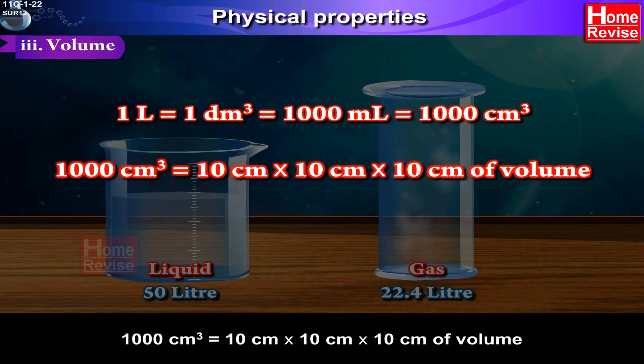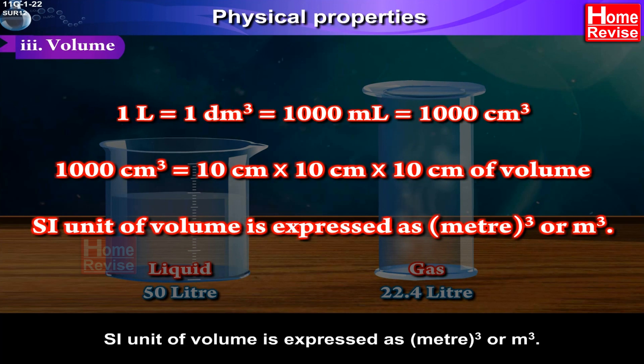1000 centimeter cube is equal to 10 centimeters multiplied by 10 centimeters multiplied by 10 centimeters of volume. SI unit of volume is expressed as meter cube or m cube.